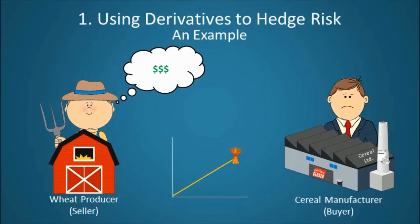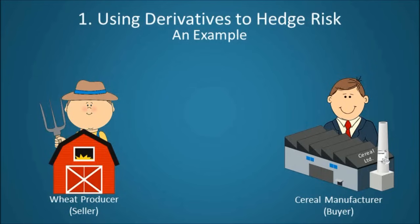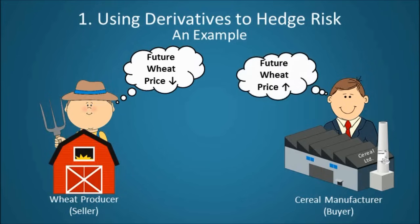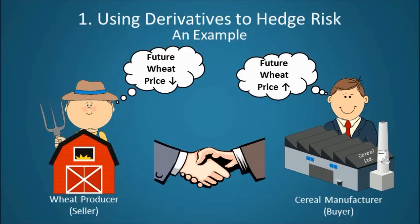So it is in the interest of wheat farmers that the price of wheat remains high, but it is in the interest of cereal manufacturers that the price of wheat remains low. Now, if a wheat producer expects that the price of wheat is about to fall, and a cereal manufacturer is of the opinion that the price of wheat is about to rise, the two parties can enter into a contract fixing the future price at which the wheat will be sold.